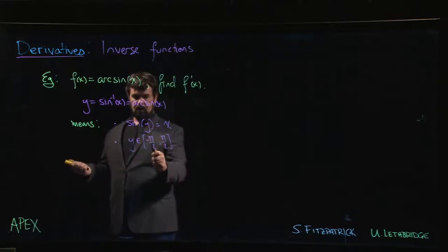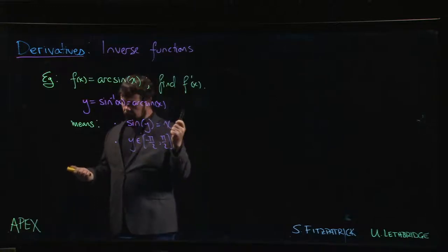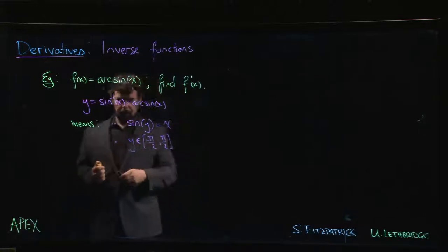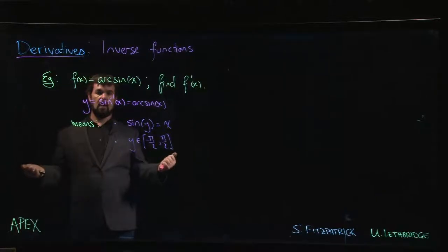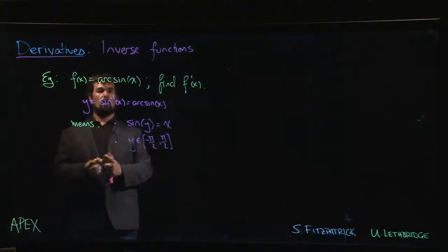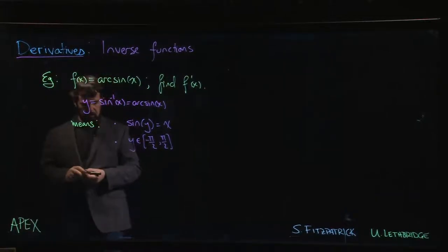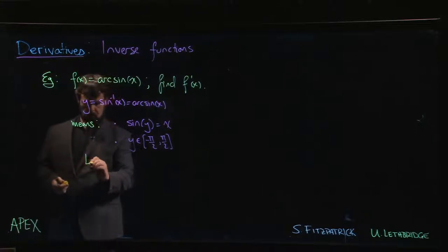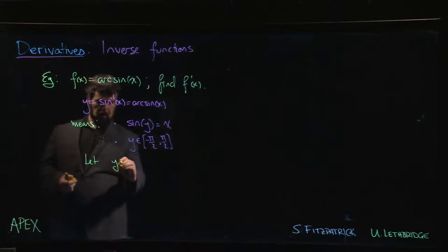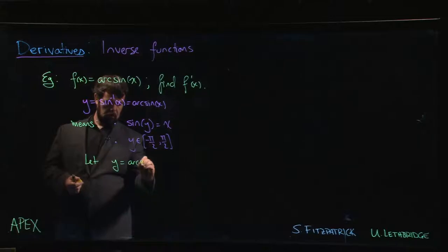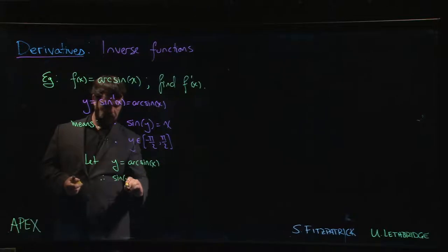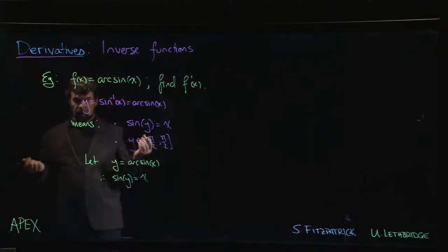All right, so how do we find f prime? Well what we can do is we can let y equal arc sine of x. From here we know that that means that sine of y equals x, and now we take the derivative of both sides.